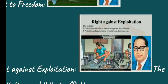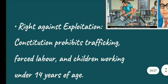Under the Right Against Exploitation, there are three main evils declared as crimes. The first is the Constitution prohibiting trafficking in human beings — the buying and selling of human beings or body parts of human beings. This is declared a crime.